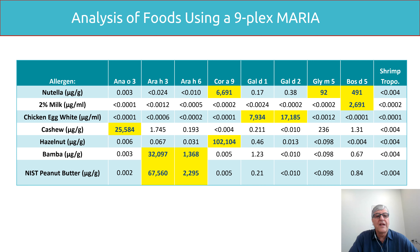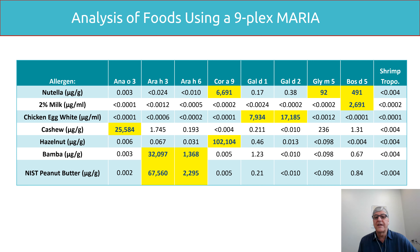Looking at real-life samples using a MARIA 9-plex: for Nutella — a hazelnut spread — you can see Cor a9 (hazelnut allergen), and it also contains soy (Gly m5) and milk (Bos d5). Chicken egg white shows Gal d1 and Gal d2 positive results, and cashew shows its major allergen Ana o3. These data are in micrograms per gram of allergen in the food. Bamba peanut puff contains peanut but not the other allergens, and the NIST peanut butter standard contains the major Ara h3 and Ara h6 allergens.